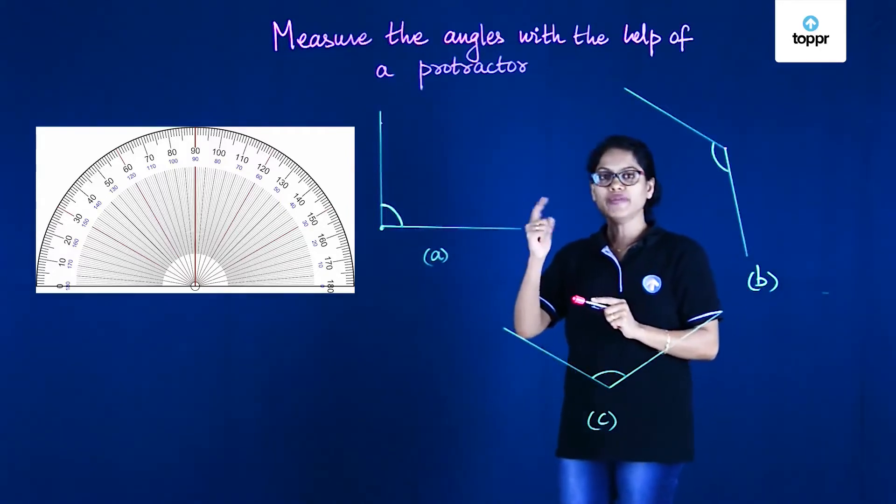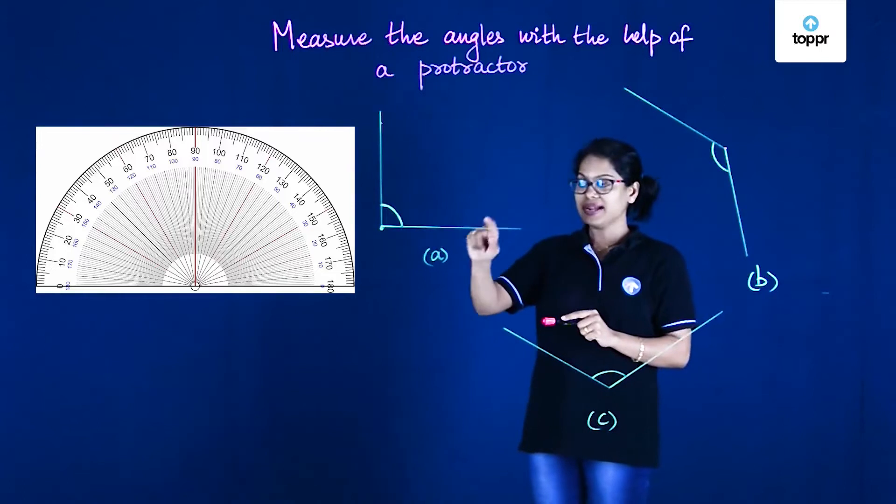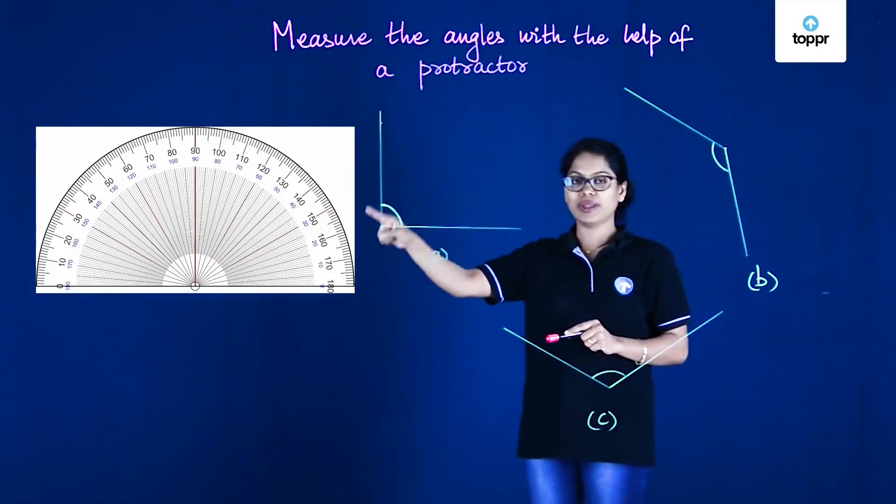But beside 180, we can see there's another 0 at the other end as well, and similarly the 0 ends at 180 at the other end.